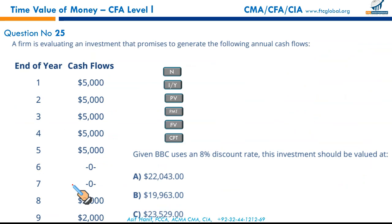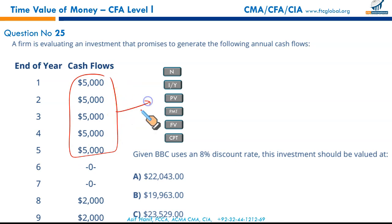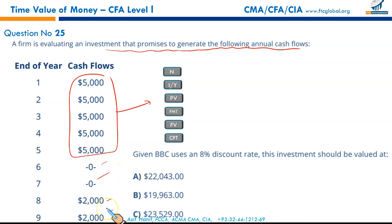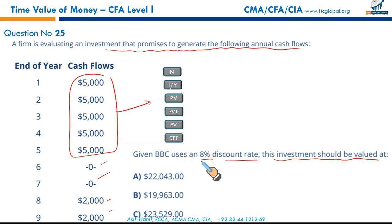Question 25: here we have some regular cash flows where we can apply TVM, plus two individual cash flows. A firm is evaluating an investment with $5,000 annual cash flows for the first 5 years, no cash flow in years 6 and 7, then $2,000 cash flows in years 8 and 9. BBC uses an 8% discount rate — what is the present value?